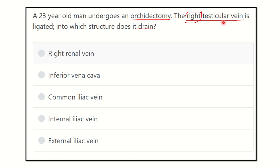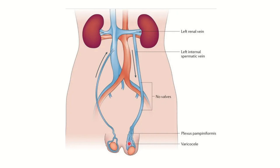Let's look at a picture. We can see the right testis and the left testis. The vein from the right testis goes upward and finally drains into a large vein in the abdomen. On the other hand, the vein from the left testis ascends and finally drains into a vein very close to the kidney — the left renal vein.